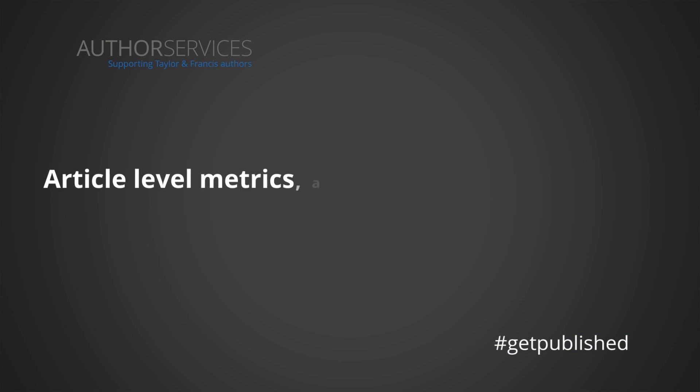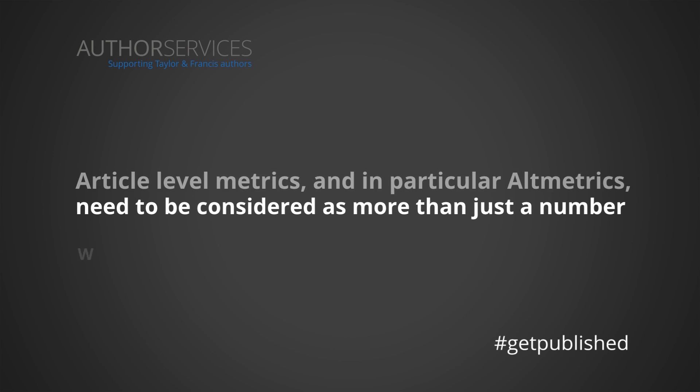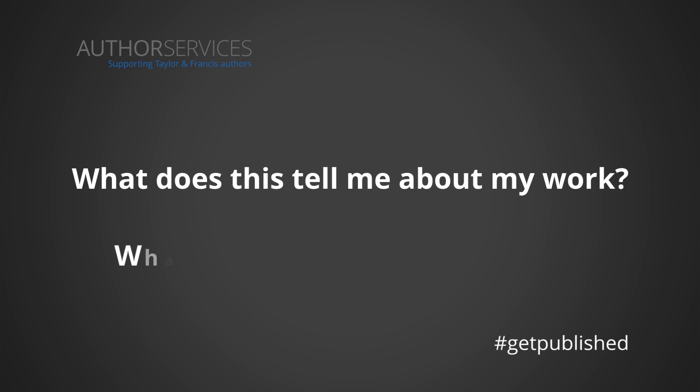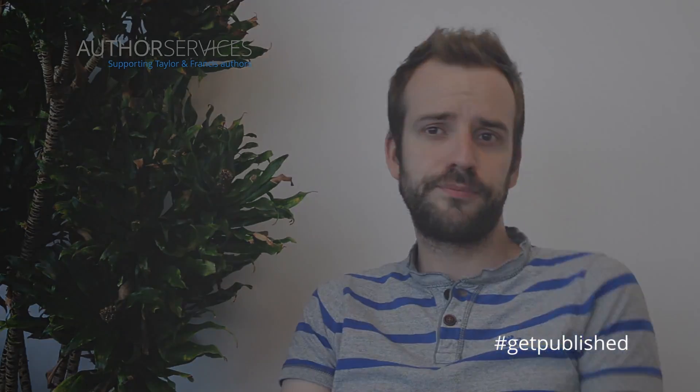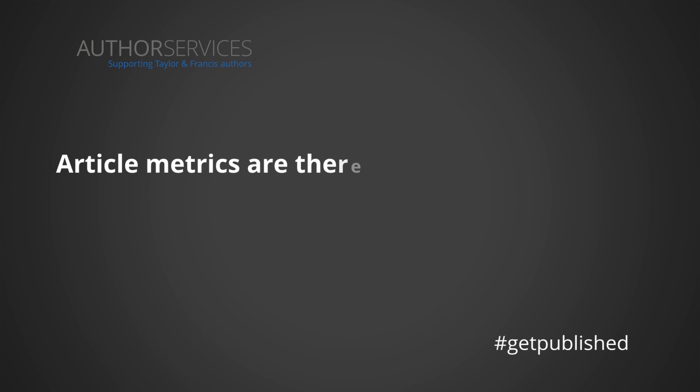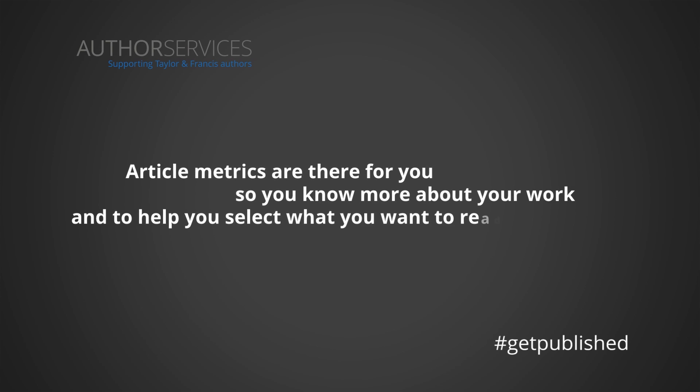Article level metrics, and in particular altmetrics, need to be considered as more than just a number. What does this tell me about my work, and what do people find interesting? Also, like all metrics, they need to be considered in the context of what you publish. Just as with citations and impact factors, different subjects and different research have very different download patterns and very different patterns in altmetrics. Article level metrics are there for you, so you know more about your own work, and to help you select what you want to read in the future.